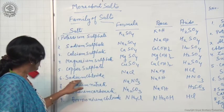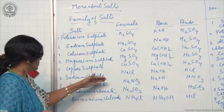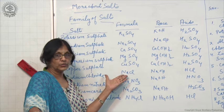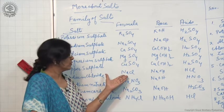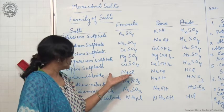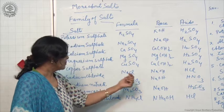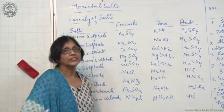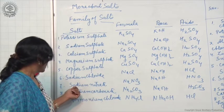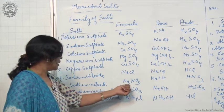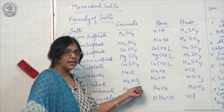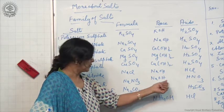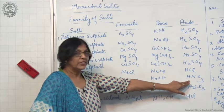Sodium chloride — the formula, all of you must be knowing, is NaCl. It is common salt used in the kitchen; it makes food tasty. It is formed from base NaOH and acid HCl. Sodium nitrate: formula is NaNO₃, base is NaOH and acid is HNO₃.